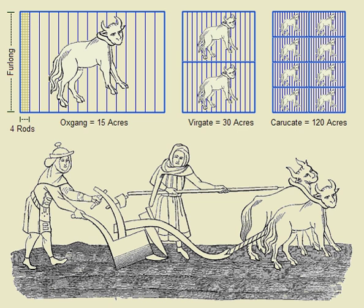In the International Yard and Pound Agreement of 1959, the United States and five countries of the Commonwealth of Nations defined the International Yard to be exactly 0.9144 metres. By inference, an International Acre may be declared as exactly 4,046.8564224 square metres, but it does not have a basis in any international agreement.